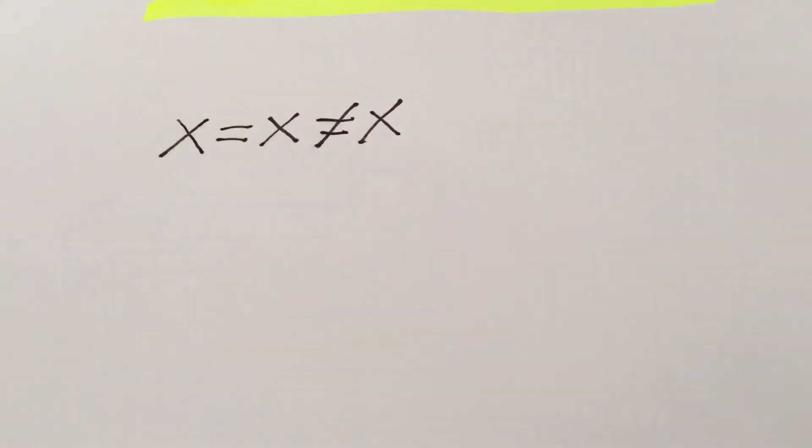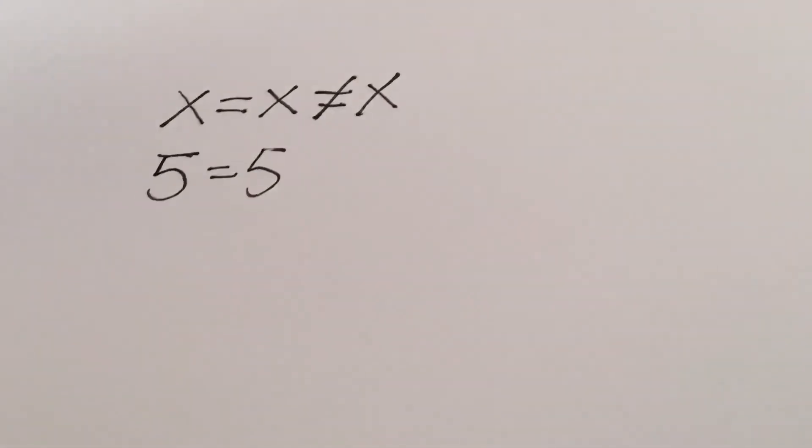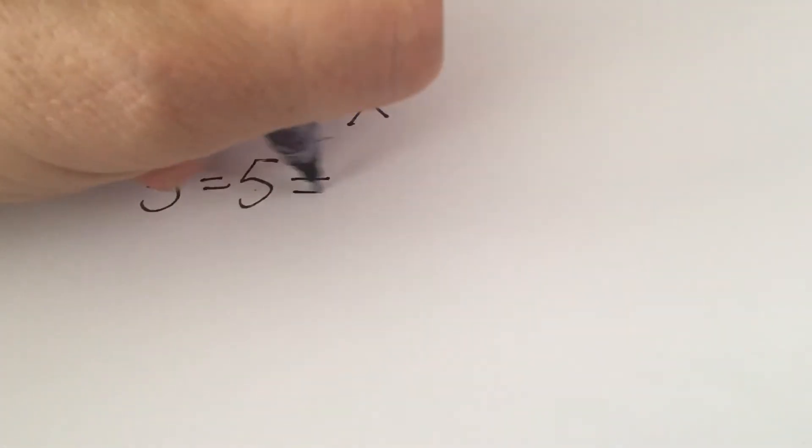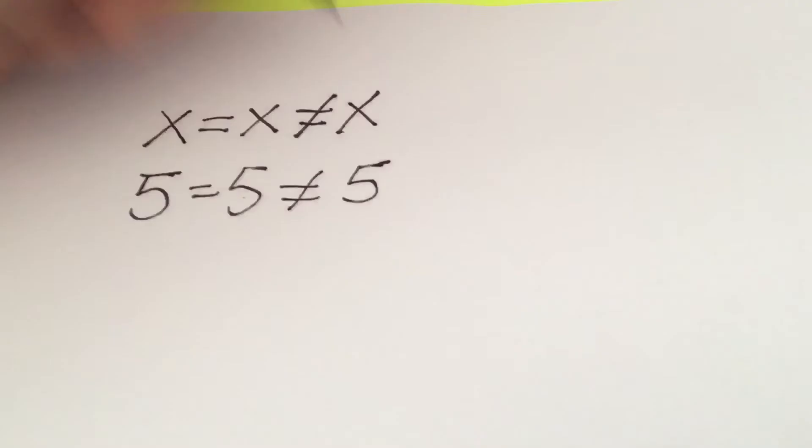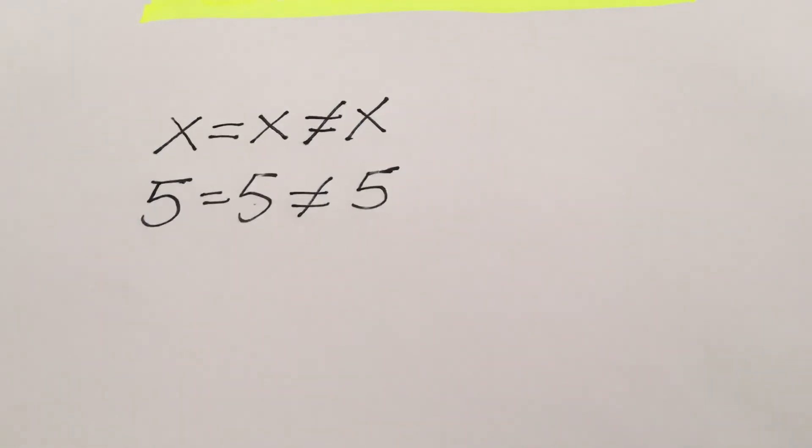All right, so and you can easily figure this out. Plug in any number, five is equal to five, which is a true statement. Five equals five always equals five. But it's not equal to five. That's not true. All right, you can't have that situation.